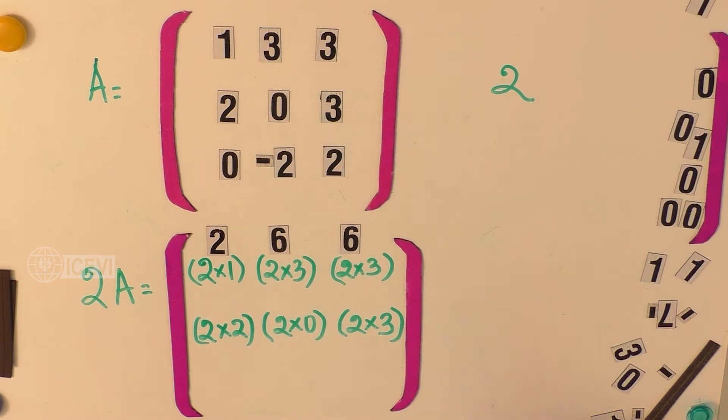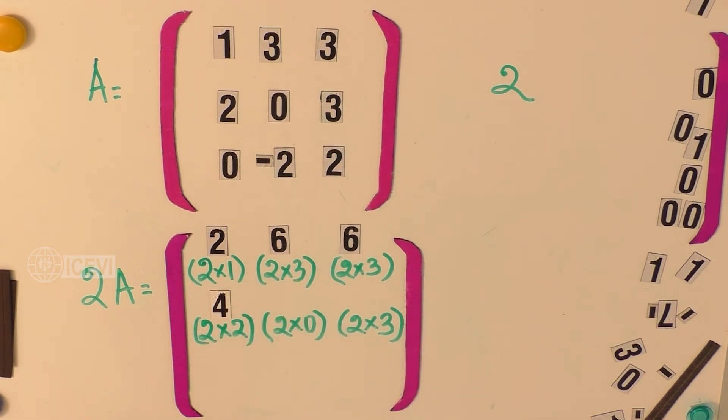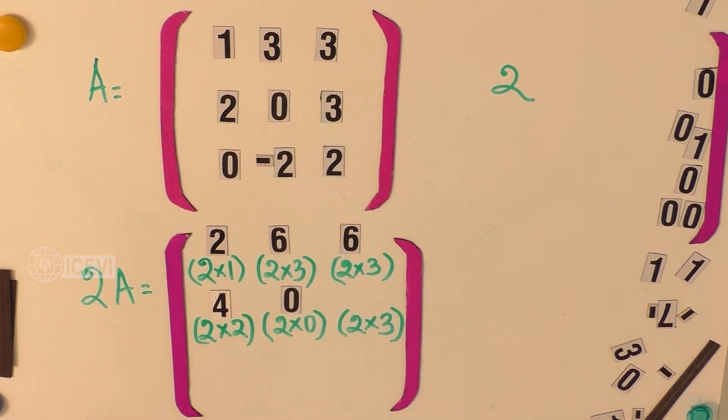Second row elements are 2 multiplied by 2, that is 4. 2 multiplied by 0, that is 0. And third element is 2 multiplied by 3, that is 6.